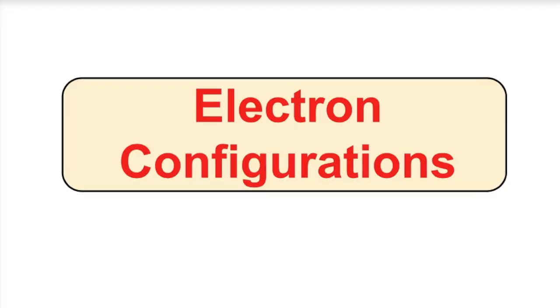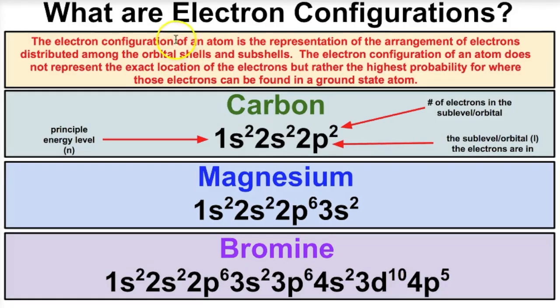Hey you guys, this is Mr. Millings and today we're going to learn how to do some electron configurations. In an earlier video we talked about atomic orbitals, which represent where electrons have the highest probability of being surrounding the nucleus of an atom in three-dimensional space. Today we're going to build on that concept and talk about electron configurations.